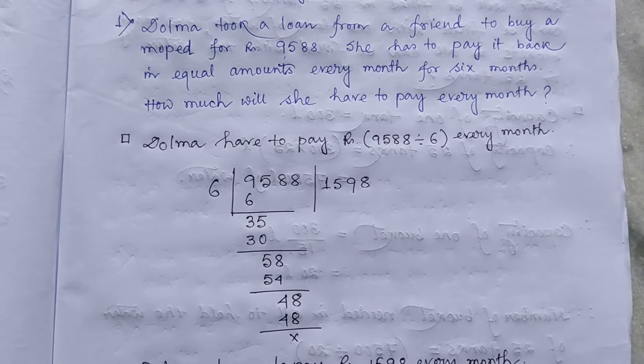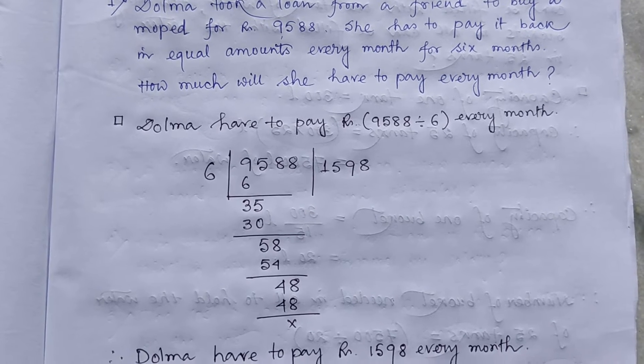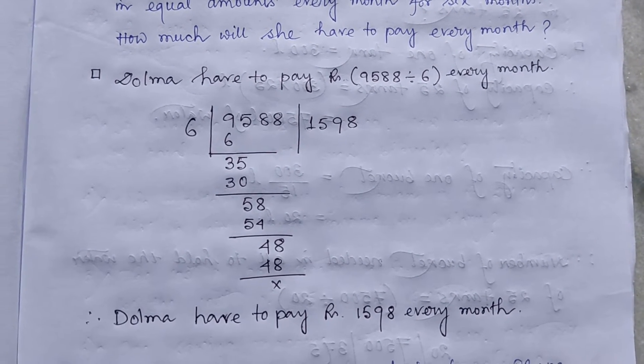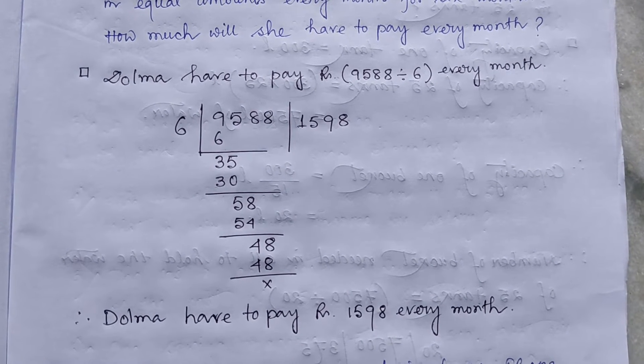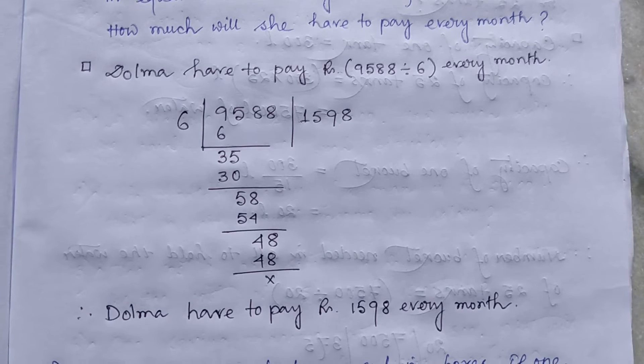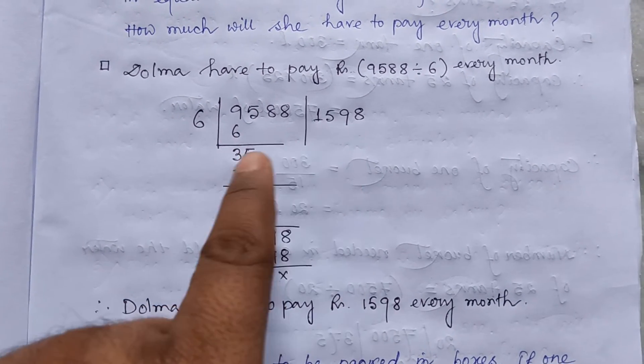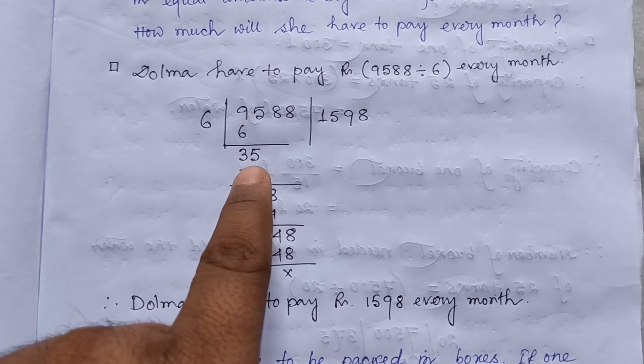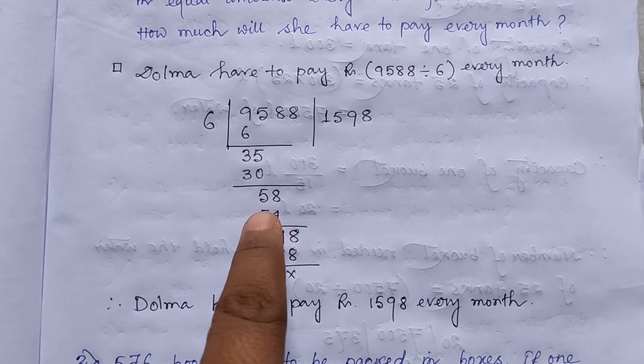So how much will she have to pay every month? So Dalma have to pay rupees 9,588 divided by 6 every month. So 9,588 divided by 6. That is 6 ones are 6. 3 is remainder. 5 comes 35. 5 6s are 30. 5 remainder.